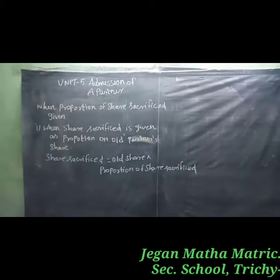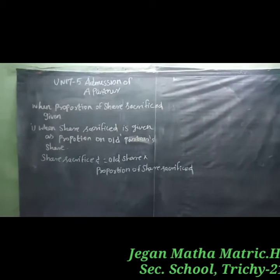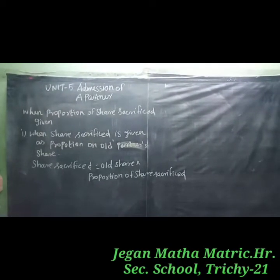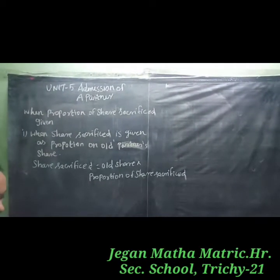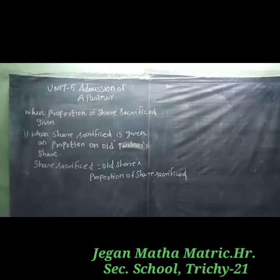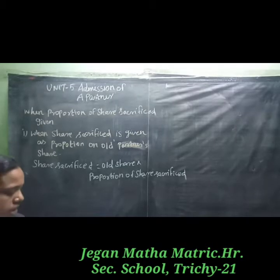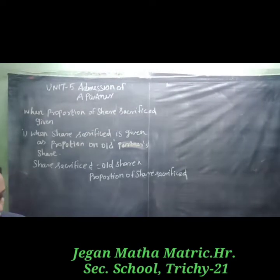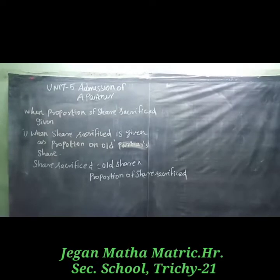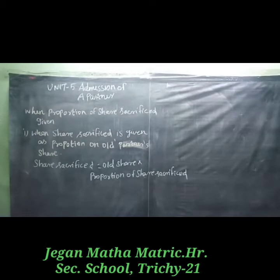Let's see sum number 12. Suresh and Dinesh are partners sharing profit and losses in the ratio of 3 to 2. They admit Ramesh as a partner. Suresh surrenders 1/5 of his share in favor of Ramesh, and Dinesh surrenders 2/5 of his share in favor of Ramesh. Calculate the new profit sharing ratio and the sacrificing ratio.